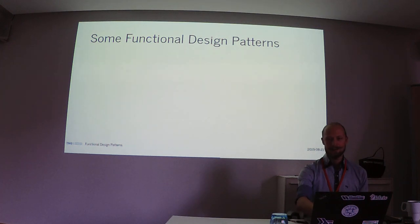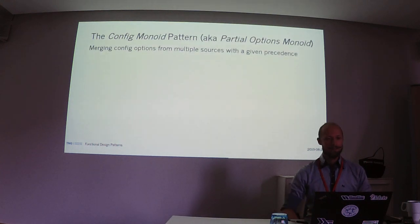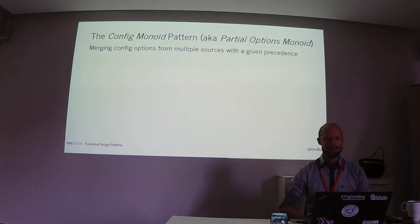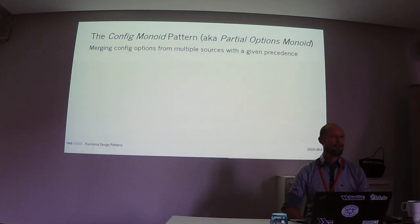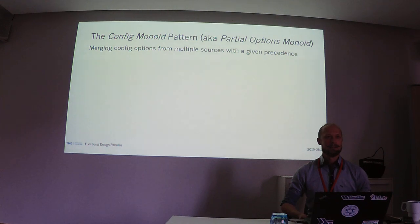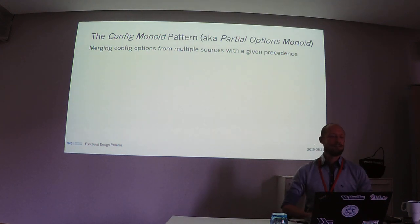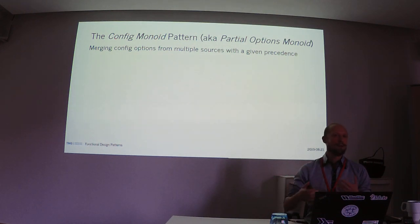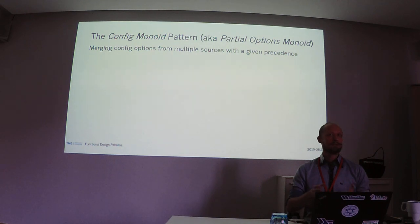The first example is the Config Monoid pattern, which I've seen in the source code of Stack — one of the Haskell build tools — where it's called the partial options monoid or config monoid. It's used to merge options from different sources with a given precedence: a config file, default options, command-line options, environment variables, and so on. Options from the command line, for example, overwrite the config file, but all sources may have options missing.